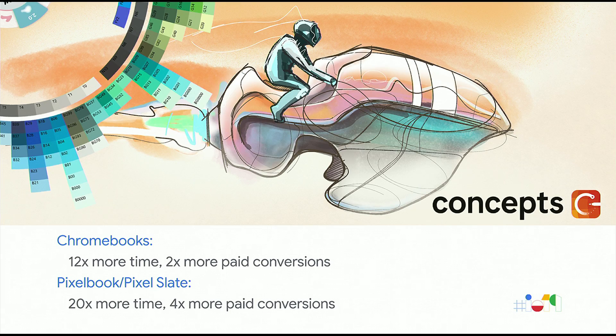We've been really proud of these numbers, and we've been working with them on Asphalt 9, which is in our retail mode in physical stores as well to show off. The other app is Concepts, an illustrating app that's really well-positioned with Chrome OS because we have a fast and responsive stylus along with larger screen real estate. On Chrome OS, they've seen 12x more time spent and double the paid conversions. On higher end devices like Pixel Books and Pixel Slates, it's even better — 20x more time spent and quadruple the paid conversions.